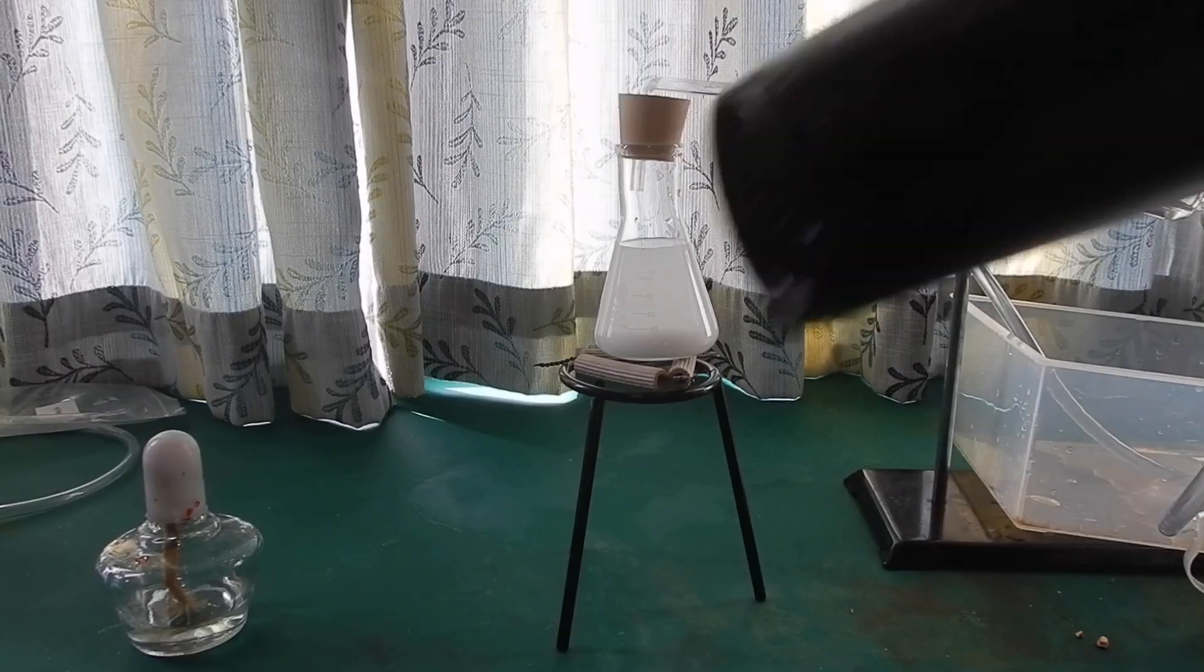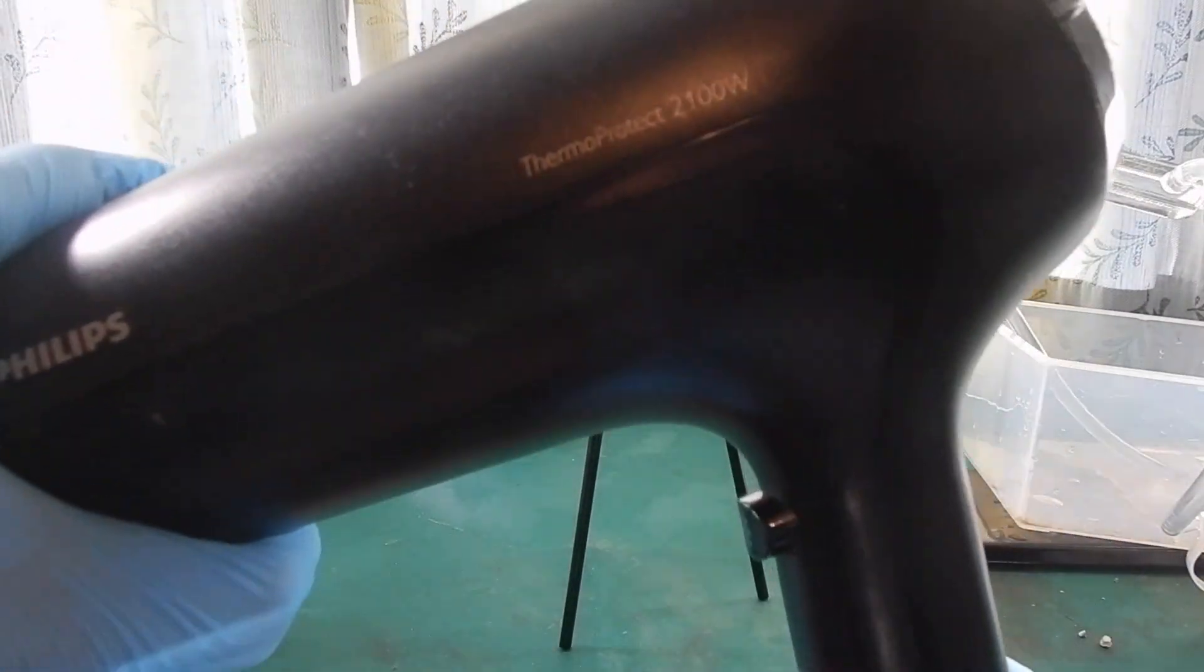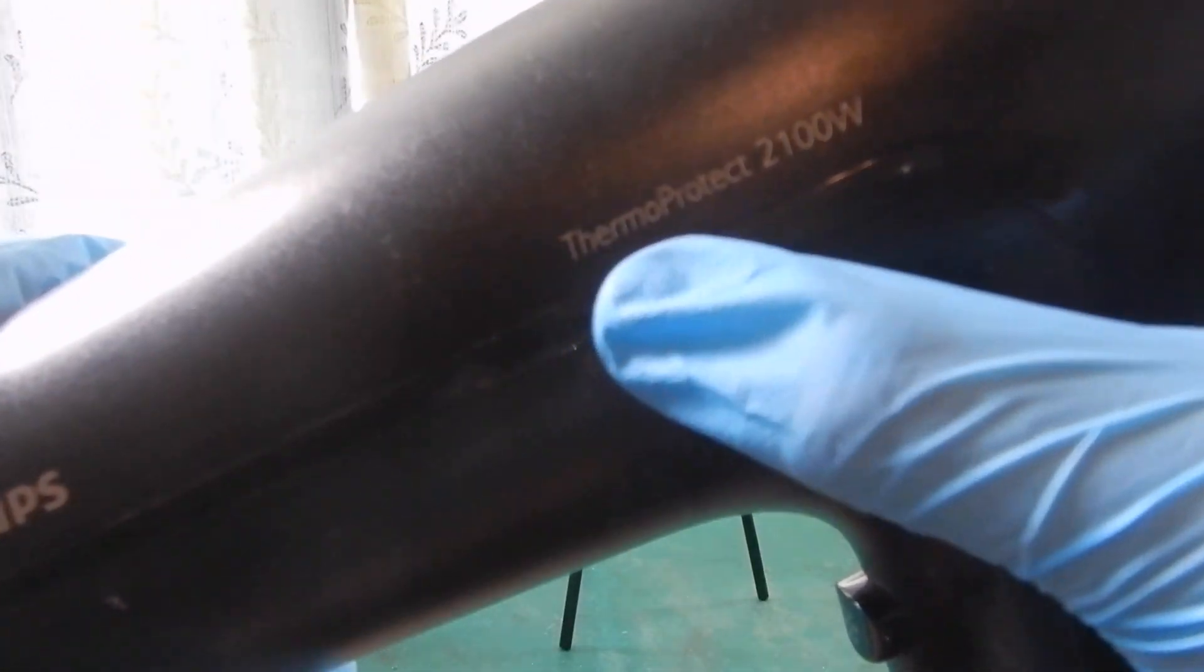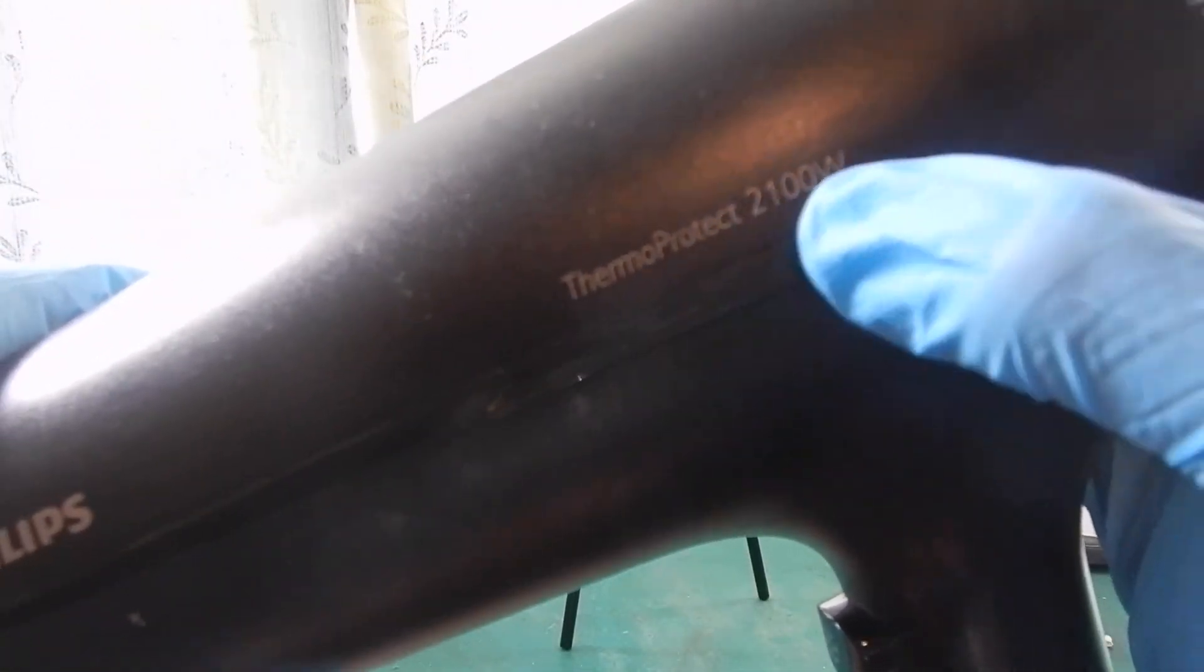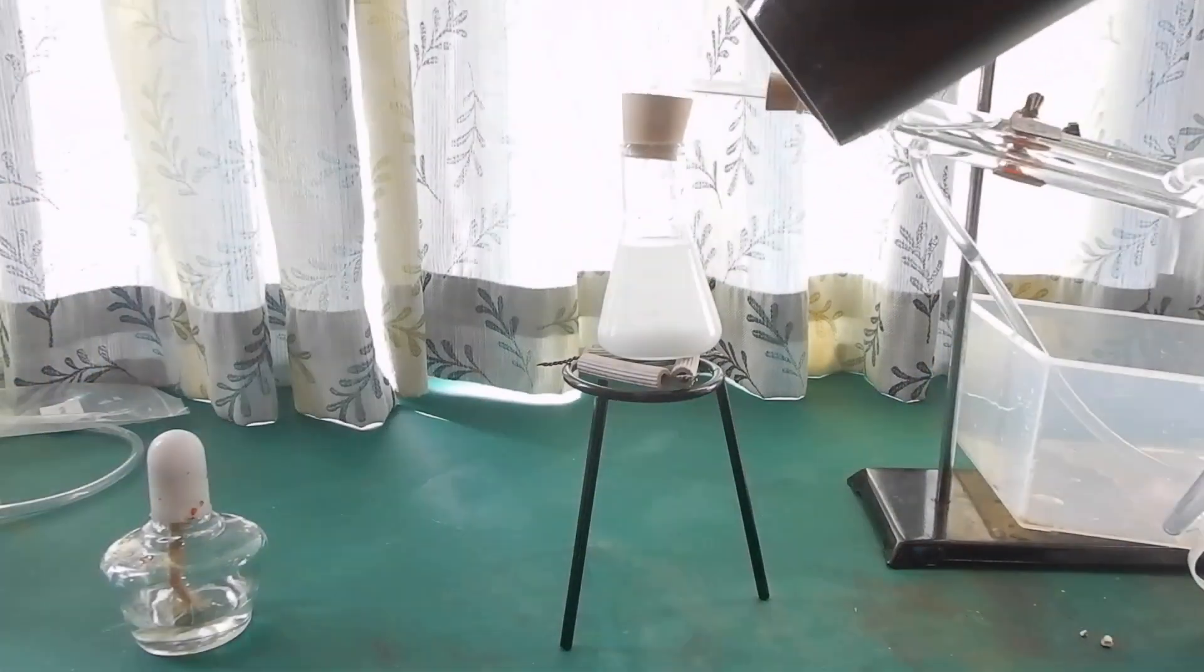I have an alcohol lamp, but I chose to use a hairdryer because it has a high power rating of 2100 watts. I have done some research and found that it actually works. We'll see in a second. Start the hairdryer and heat the flask gently.